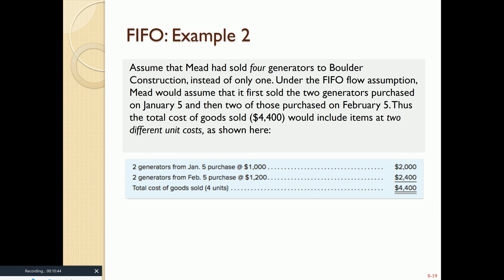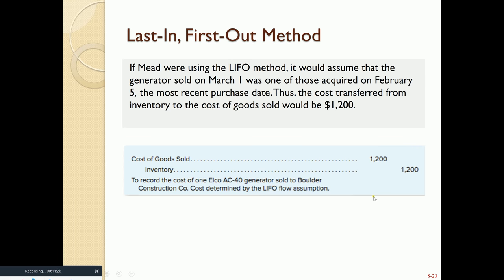Continuing with FIFO, if instead of selling one generator we sold four — out of the five purchased — we go from the oldest layer forward. The two units at $1,000 from January are sold first, then two from February's purchase at $1,200. That gives a cost of goods sold of $4,400.